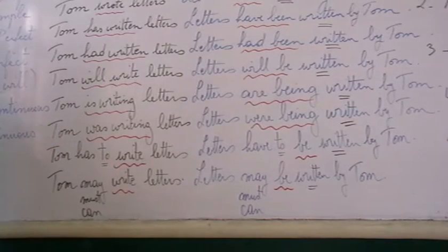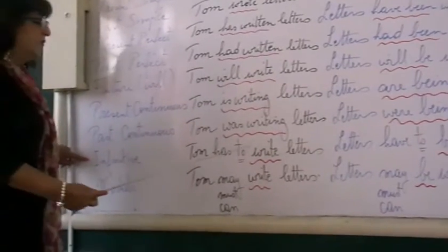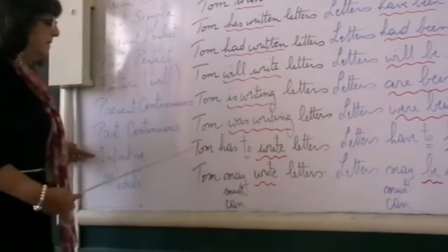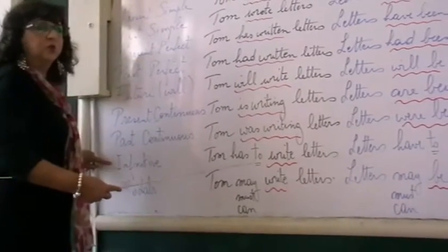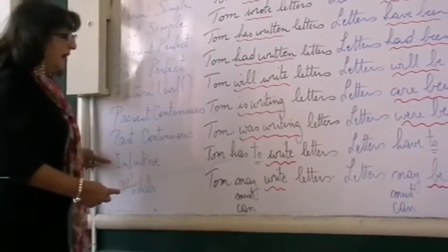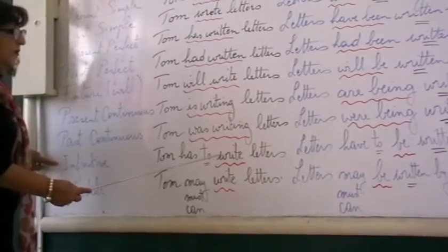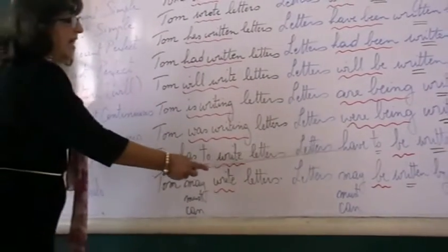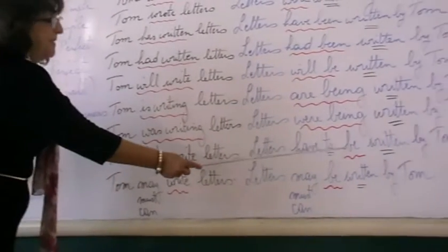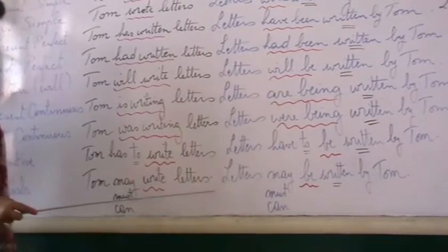What about the infinitive with 'to'? 'To' is followed by the infinitive. For example: Tom has to write letters. So after 'to', we use the infinitive of 'to be'. So: letters have to be written by Tom.